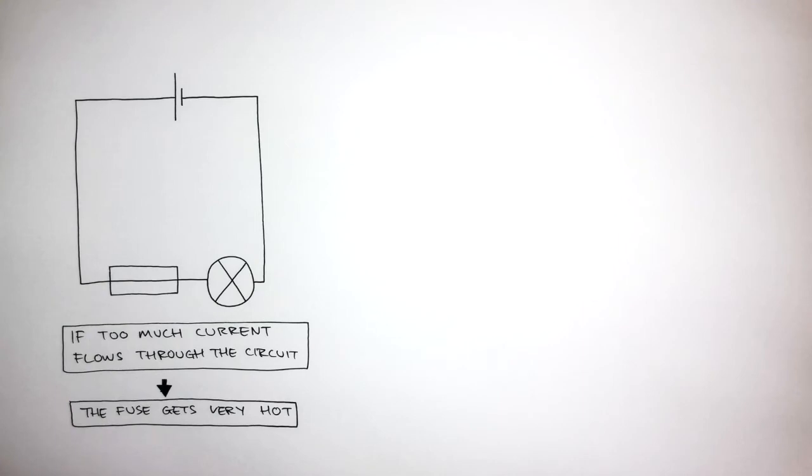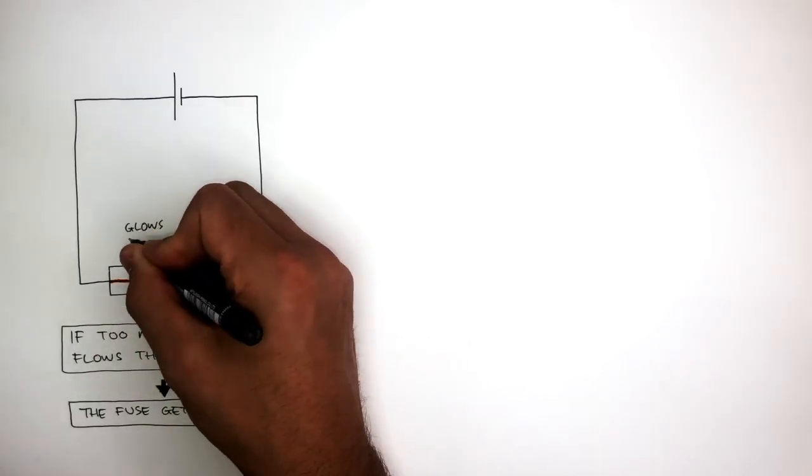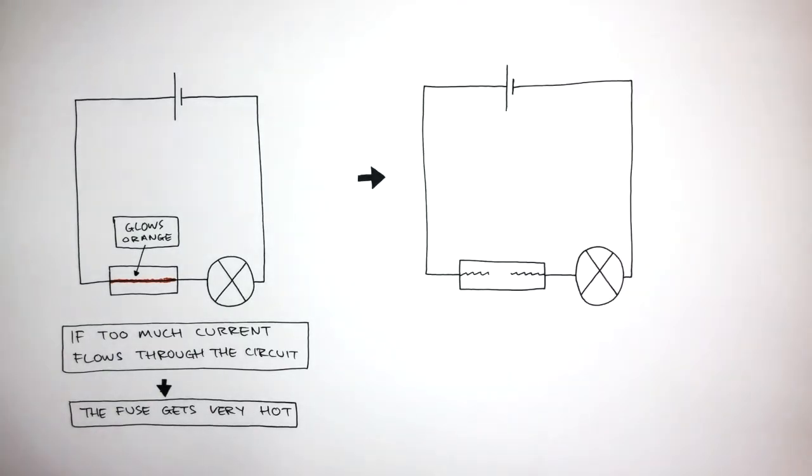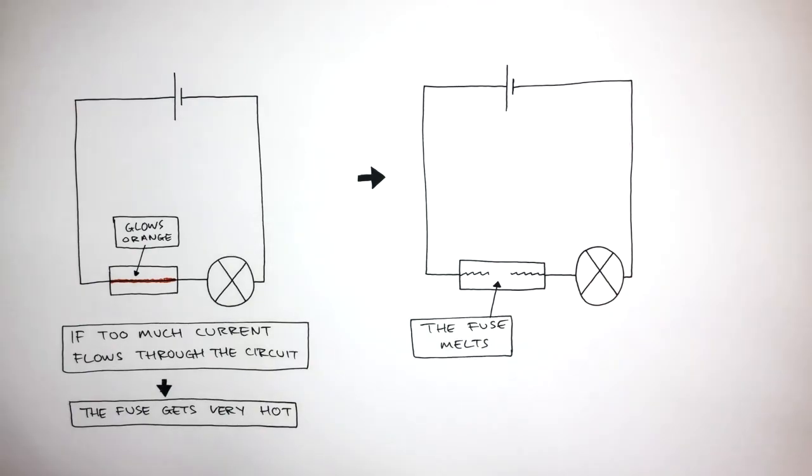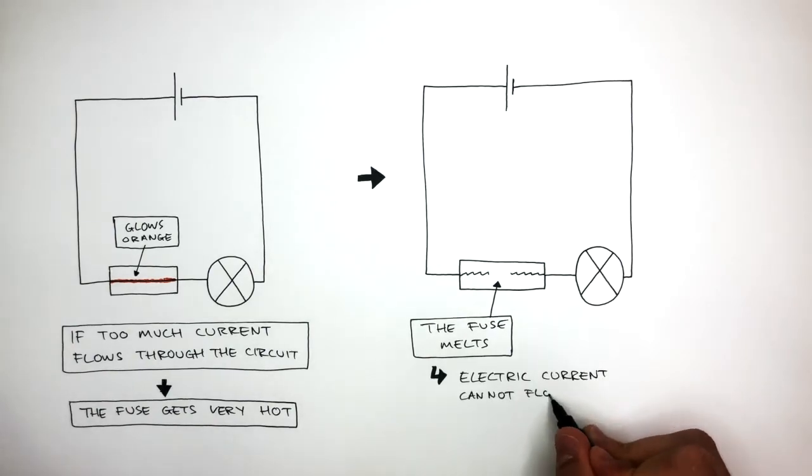And when the current is too high and the fuse gets very hot, what we're actually saying is the thin piece of metal inside the fuse glows orange as the electric current is too high due to the high resistance in the fuse. Now if we take a look at what's happened to the fuse, we can see there is no longer a complete circuit. As when the current is too high, the fuse melts. And this is really important to protect the circuit. As the electric current cannot flow, so the circuit breaks and switches off.